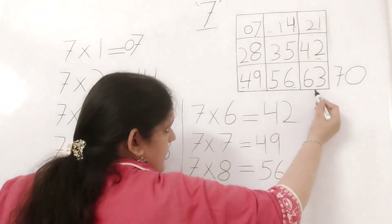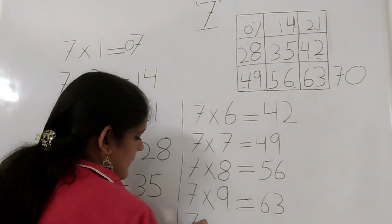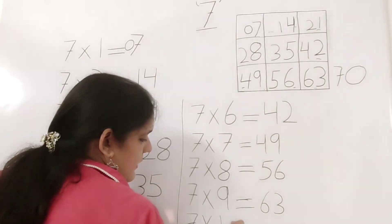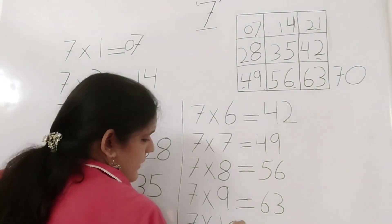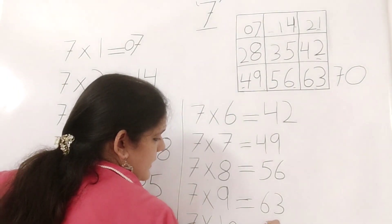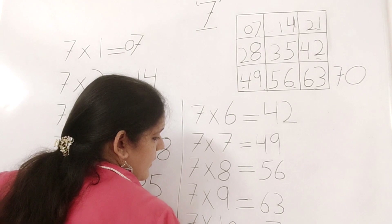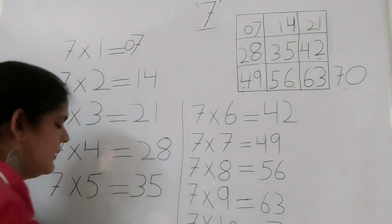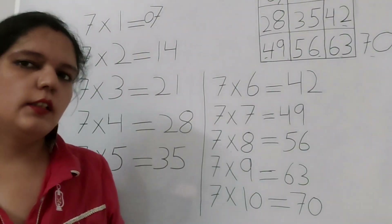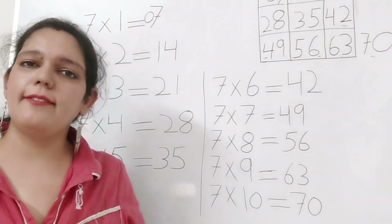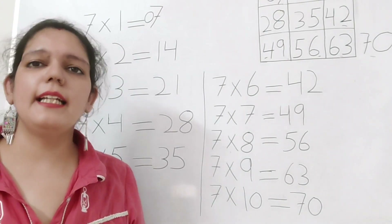7 times 7 is 49. 7 times 9 is 63. This is our 63. And last is 7 times 10 is equal to 70. We have 70 here. So this is our table for 7, that is the 7 times table.